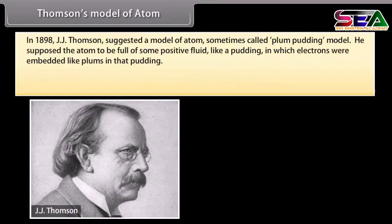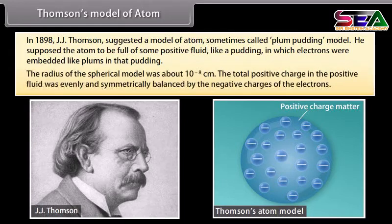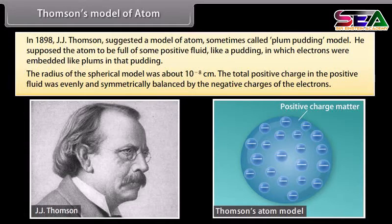Thomson's model of atom: In 1898, J.J. Thomson suggested a model of the atom, sometimes called the plum pudding model. He supposed the atom to be full of some positive fluid — like a pudding — in which electrons were embedded like plums. The radius of this spherical model was about 10 raised to the power minus 8 centimeter. The total positive charge was evenly and symmetrically balanced by the negative charges of the electrons. But this model was discarded because it failed to satisfy the results of experiments performed by Rutherford.